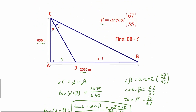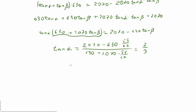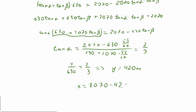Now if we take a look at the diagram, alpha is this angle here. So tangent alpha equals y divided by 630. We have that y divided by 630 equals our computed value, so from here we can find y, which equals 420 meters. And since y is 420 meters, that means x equals 2070 minus 420, which equals 1650 meters.